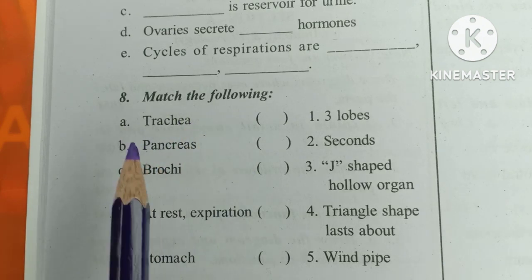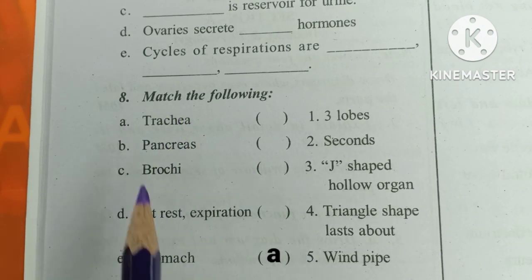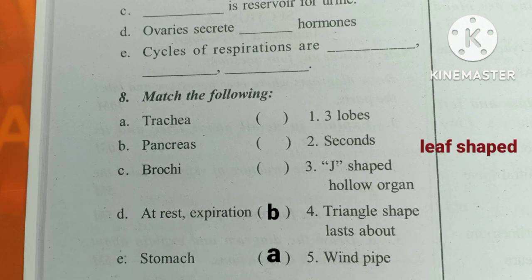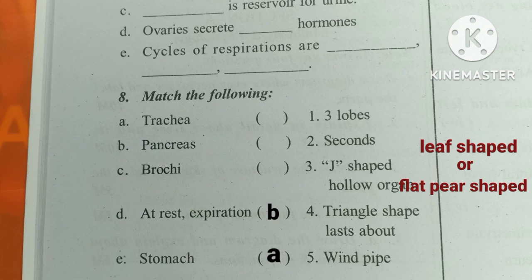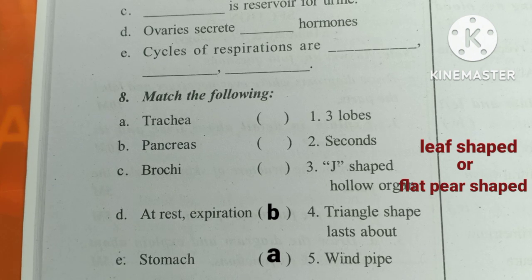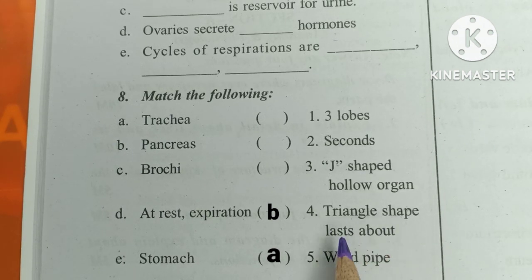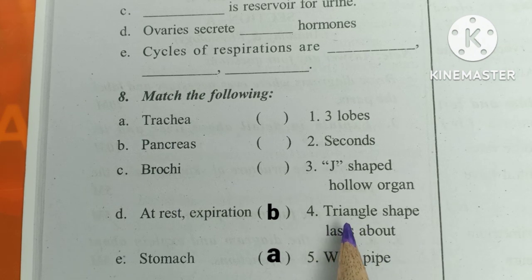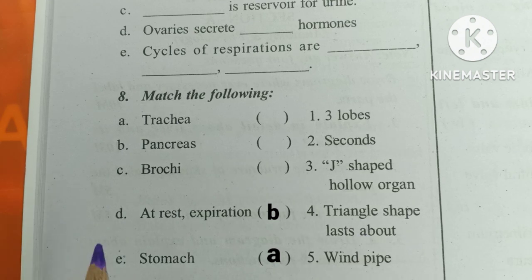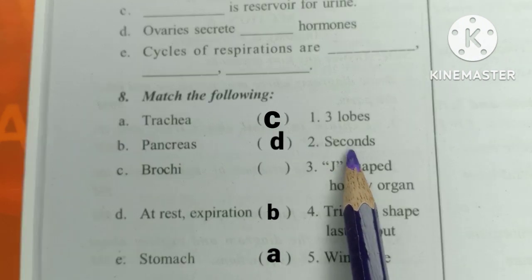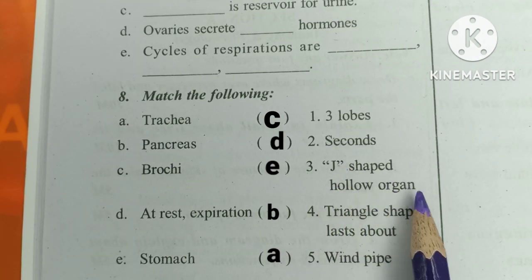Number 8: Match the following. Trachea — windpipe. Pancreas — the last part is a triangle shape. Pancreas overall is leaf shape or flat pear shape. Bronchi — three lobes. At rest, expiration seconds. Stomach — J-shaped hollow organ.